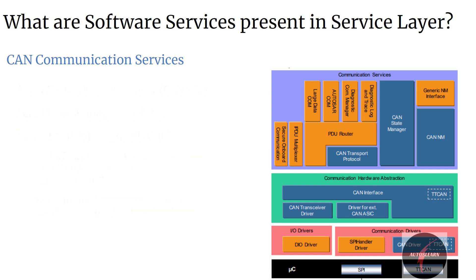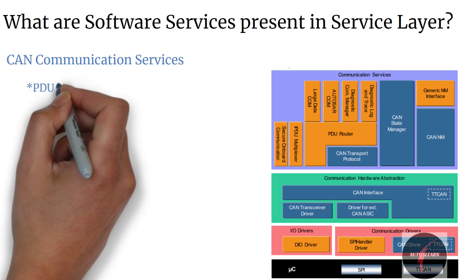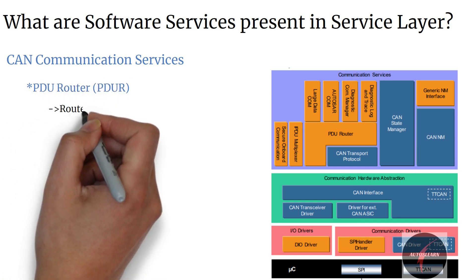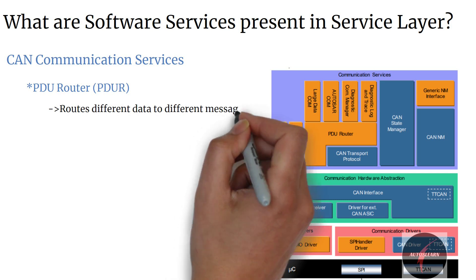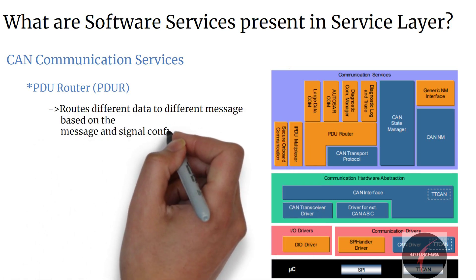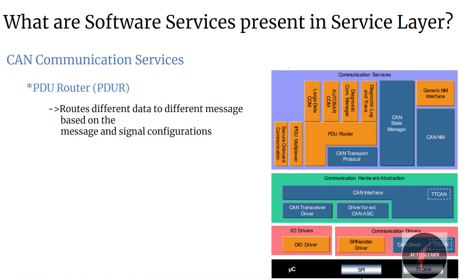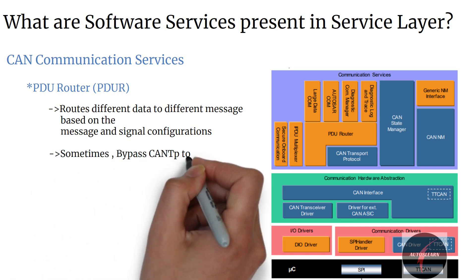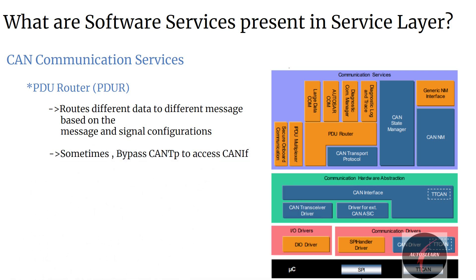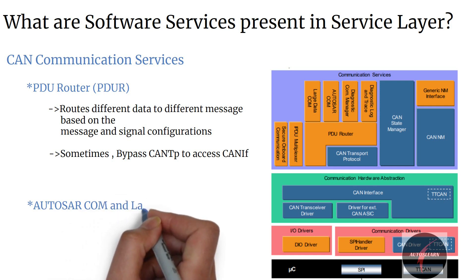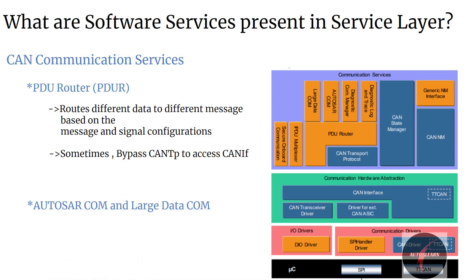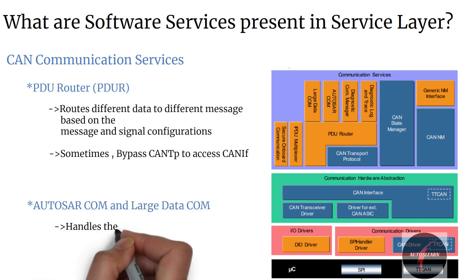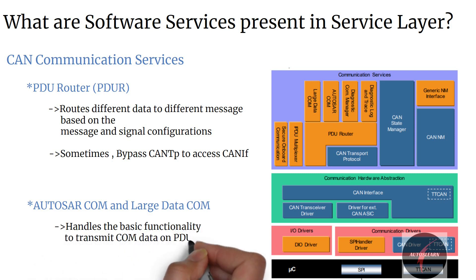The intermediate PDU router routes different data to different messages based on message and signal configurations. It can also bypass the CAN TP layer and access the CAN IF layer of the communication hardware abstraction. On top of the PDU router, we have AUTOSAR COM and Large Data COM, which handle the basic functionality to transfer COM data on the PDU router.